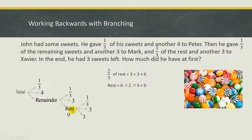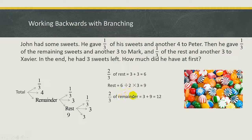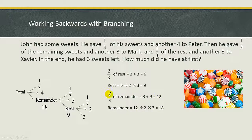Applying the same logic: after giving away one-third of the remainder to Mark, this plus this must give us two-thirds of the remainder. So two-thirds of the remainder equals three plus nine, which is twelve. To find the remainder, take twelve divided by two times three — twelve divided by two is six, and six times three is eighteen. So there are eighteen sweets at this stage.